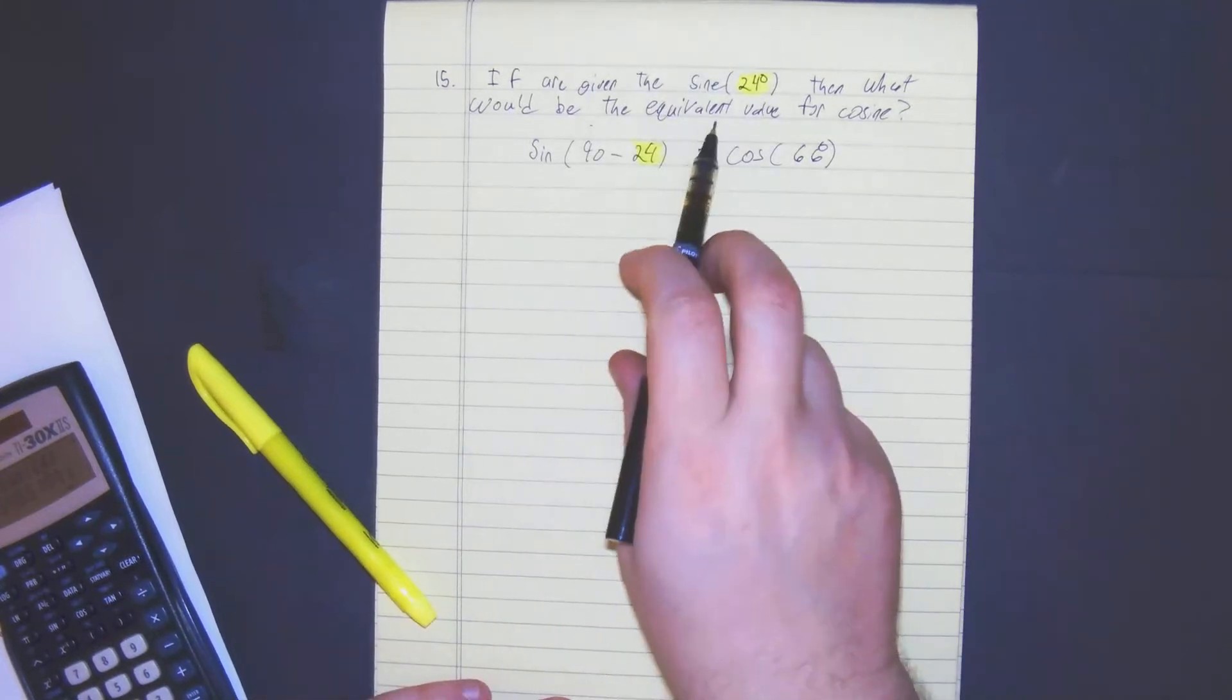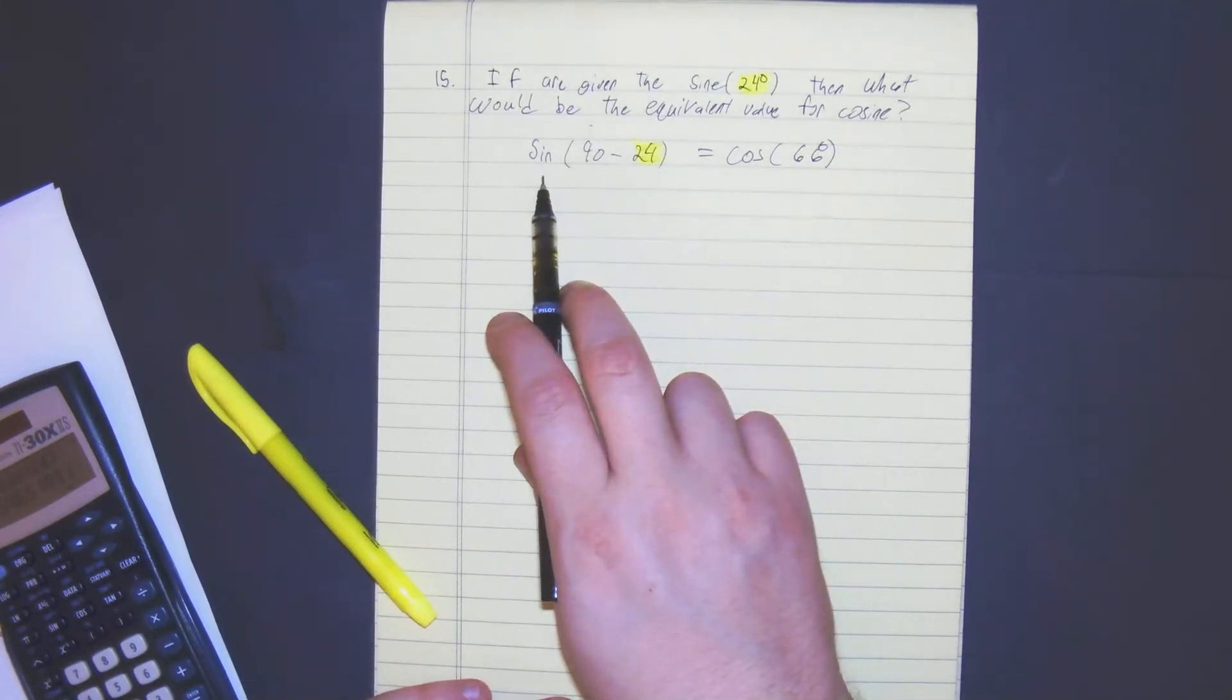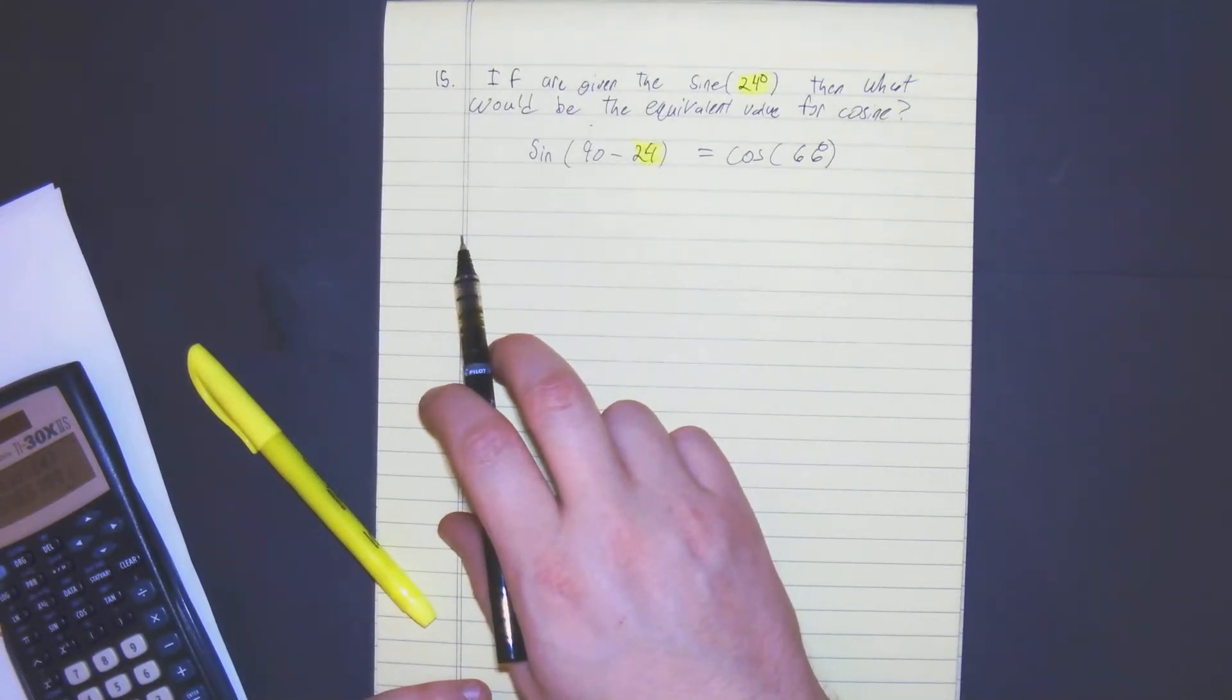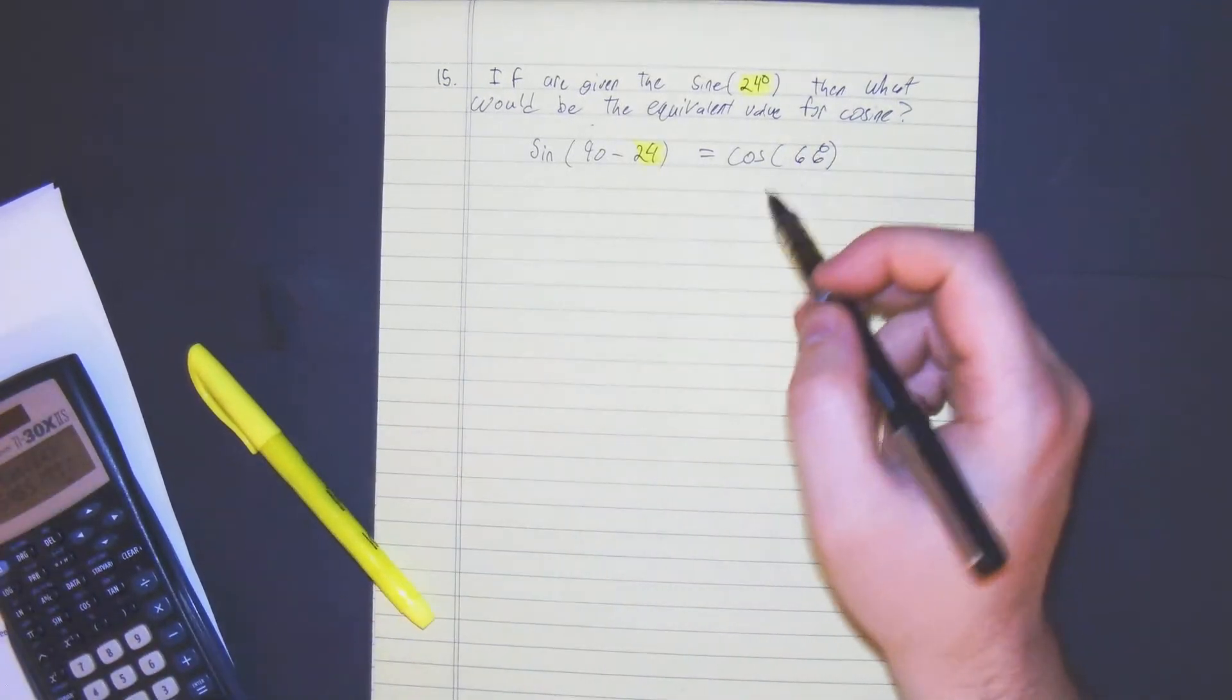So if you're given the value of 24 degrees, then the equivalent value would be the cosine of 66. So how could you check your work?